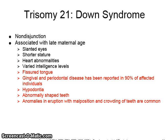Down syndrome has been studied in other chapters. Some of the oral and facial characteristics are fissured tongue, gingival and periodontal disease, hypodontia, abnormally shaped teeth, and anomalies in eruption with malposition and crowding of teeth are common.